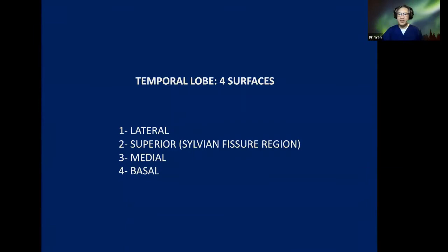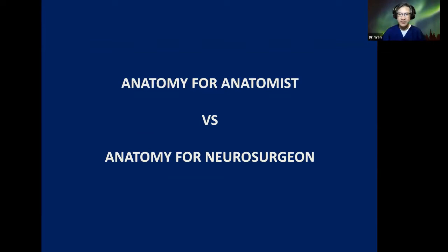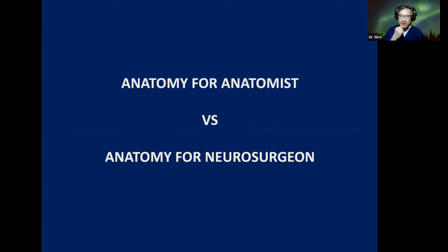We know that the temporal lobe presents four surfaces: lateral, superior — which is related to the Sylvian fissure region — medial, and basal. But as I said, anatomy for anatomy is different from anatomy for neurosurgeons. Today I am going to talk about the anatomical aspects of the temporal lobe, mainly the Sylvian fissure region, which is important for neurosurgeons.